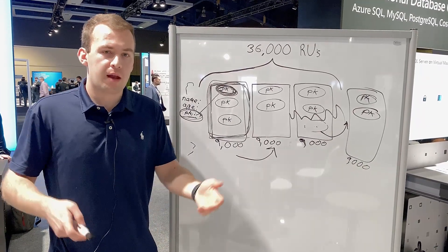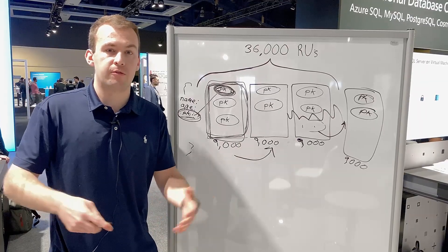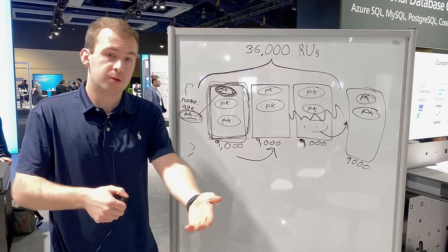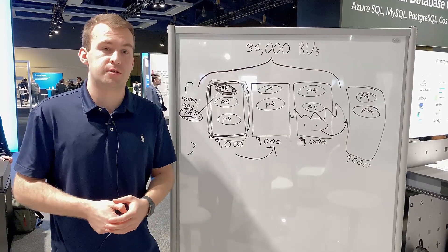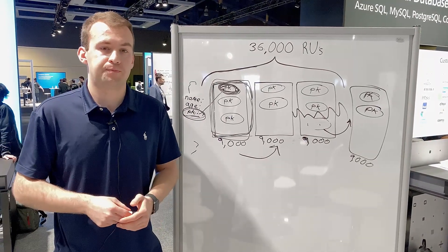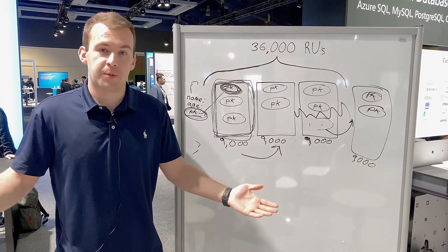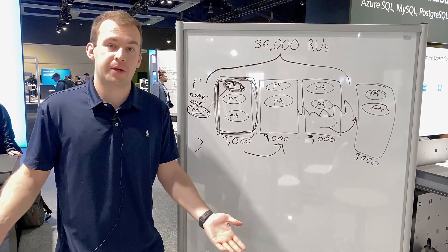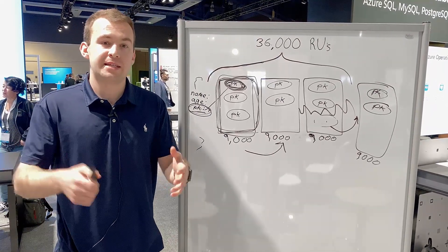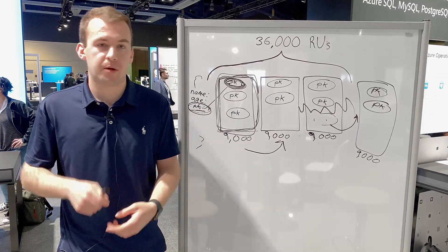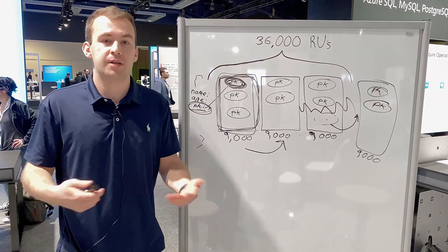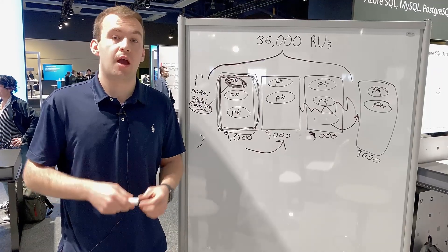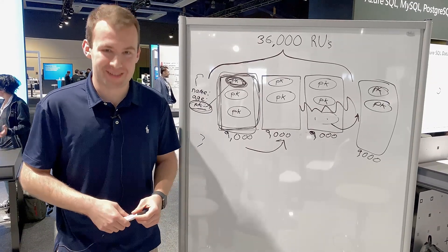In addition, partition keys are the logical boundary for stored procedures in Cosmos DB, so that's also something to keep in mind if you're using stored procedures. That's partitioning. I hope this gave you some insights into how it works behind the scenes and some key takeaways for what you as a developer, architect, or DBA using Cosmos DB needs to know about partitioning in order to be successful. Thanks again.